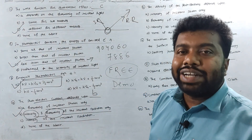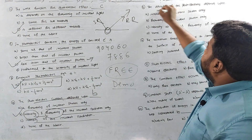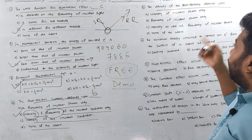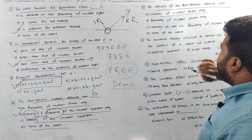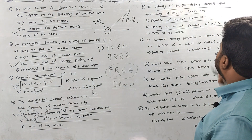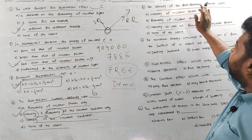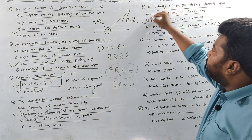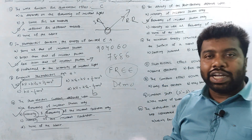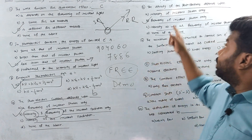If the intensity of the frequency is increased, the photoelectric current will be increased. The velocity of the photoelectrons depends on the frequency. If the frequency is increased, then the velocity will be increased. The number of photoelectrons depends on intensity.